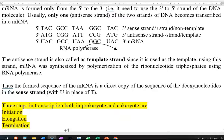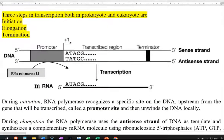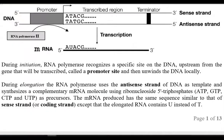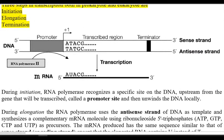Three main steps are commonly present in both prokaryotes and eukaryotes from the standpoint of transcription. They are initiation, elongation, and termination. Now, we will look at what is meant by initiation, elongation, and termination of the transcription process. Before that, we will look at the following diagram.